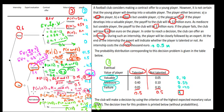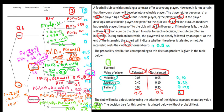Now to find the expected value of a not-talented player, we calculate the sum of probabilities times their corresponding values. That equals 0.10 times a payoff of 11.5 for being valuable, plus 0.2 times a payoff of 1.5 for being mediocre, plus 0.7 times a payoff of minus 4.5 for being a failure.